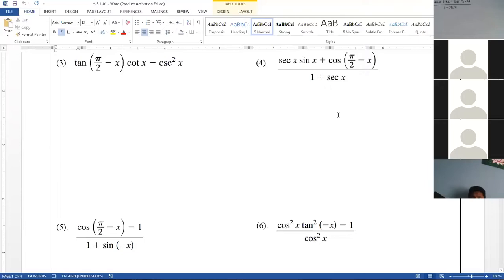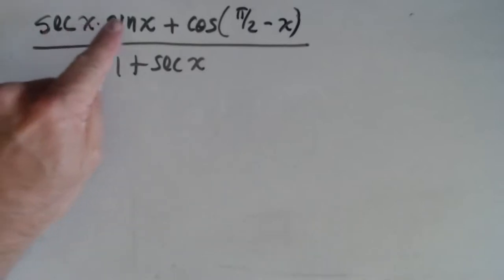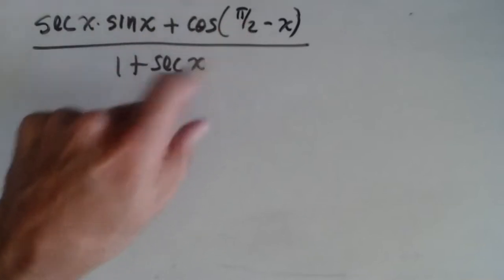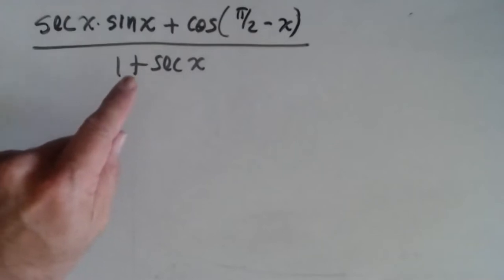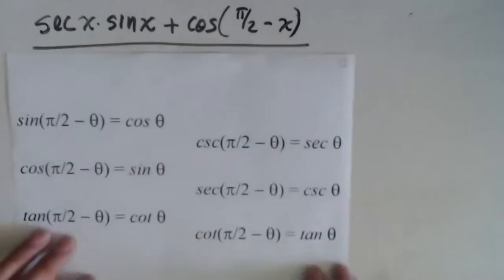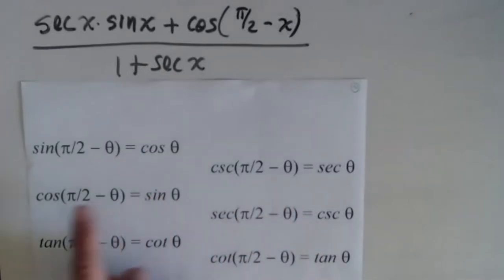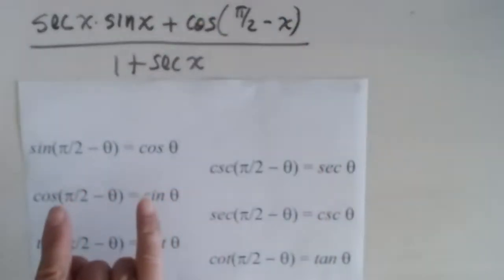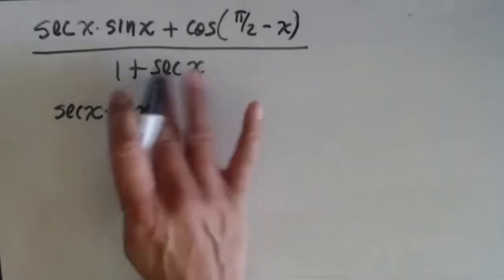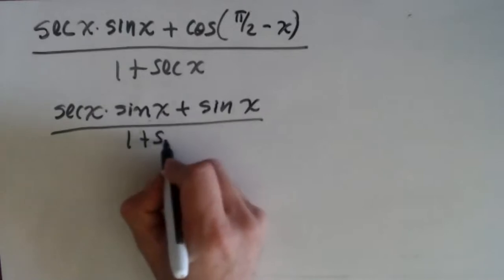Not a big deal. I have secant x times sine x — not very beautiful, but this doesn't give a problem. And cosine of pi over 2 minus x — this is something I can change. Looking for my identities, cosine of pi over 2 minus theta is sine theta. So I can change this using this identity.